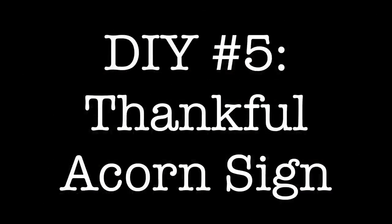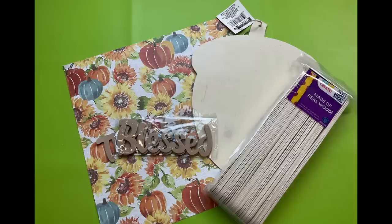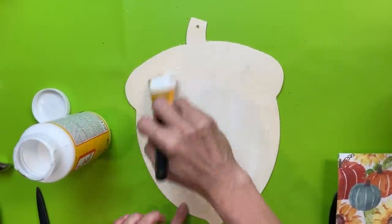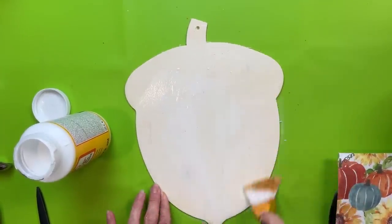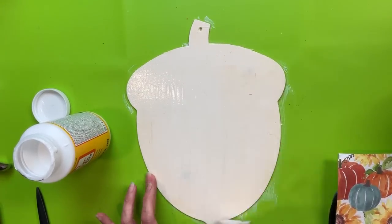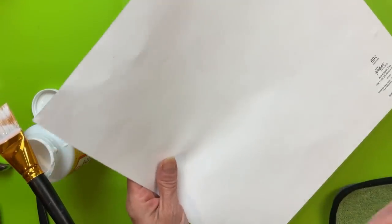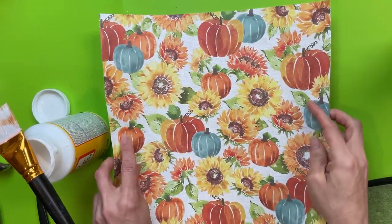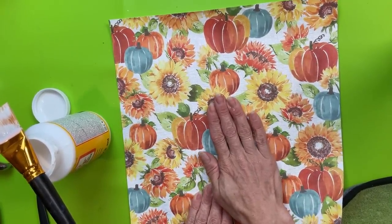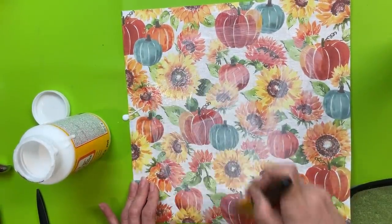And for DIY number five, we're going to make this thankful acorn sign using one of the acorn wood signs from Dollar Tree, some of these leather words, some scrapbook paper from Hobby Lobby, and more of the giant craft sticks from Walmart. So, the first thing I'm going to do is apply a layer of Mod Podge to the entire front of our wood acorn, and then we'll spritz some water on the back of the scrapbook paper. I was so excited. This was a new pattern that I had not seen before at Hobby Lobby, but we're just going to Mod Podge this on using the same method by spritzing a little bit of water. It just helps the paper stick to the Mod Podge without creating air bubbles. So, we'll brush that on. We'll rub it out really good. Make sure it's nice and attached. I love the sunflowers and the orange and teal pumpkins. And then once we know that it's down, we'll put another layer of Mod Podge over the front of the paper and then set that aside to dry completely.